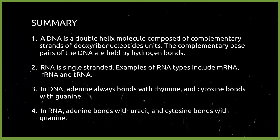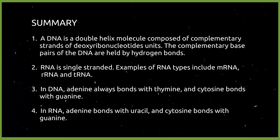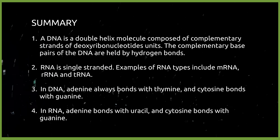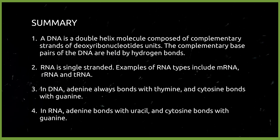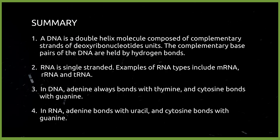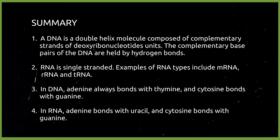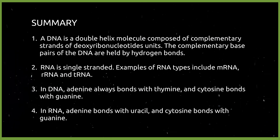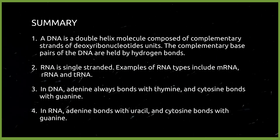DNA is a double helix molecule composed of complementary strands of deoxyribonucleotide units. The complementary base pairs of DNA are held by hydrogen bonds. RNA is a single-stranded molecule. Examples of RNA types include messenger RNA or mRNA, ribosomal RNA or rRNA, and transfer RNA or tRNA. In DNA, adenine always pairs with thymine and cytosine pairs with guanine. In RNA, adenine pairs with uracil and cytosine pairs with guanine.